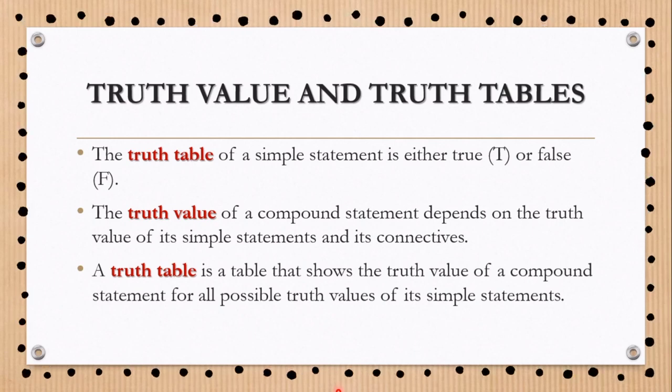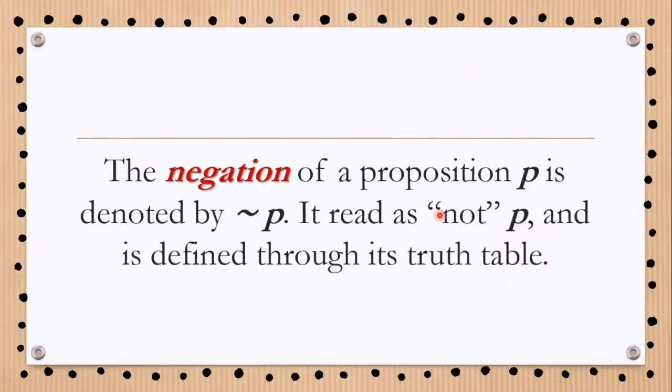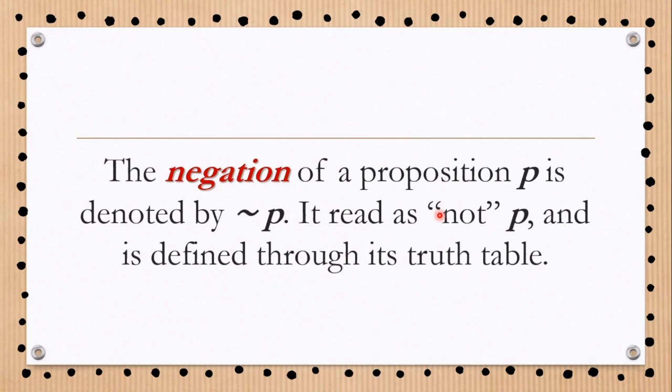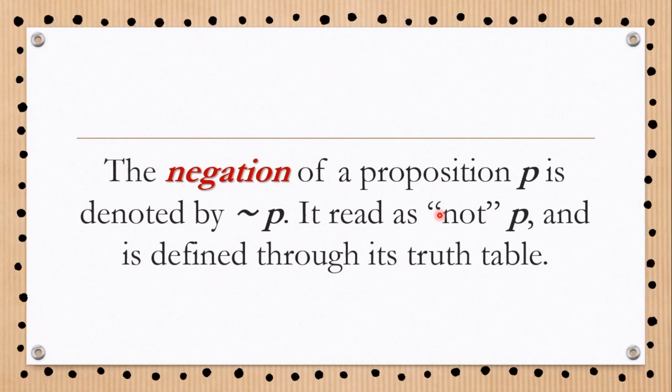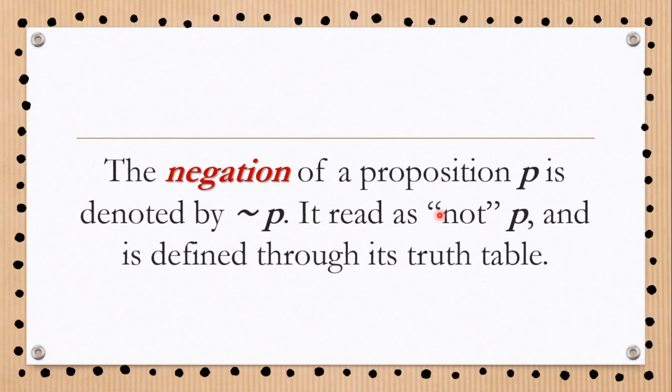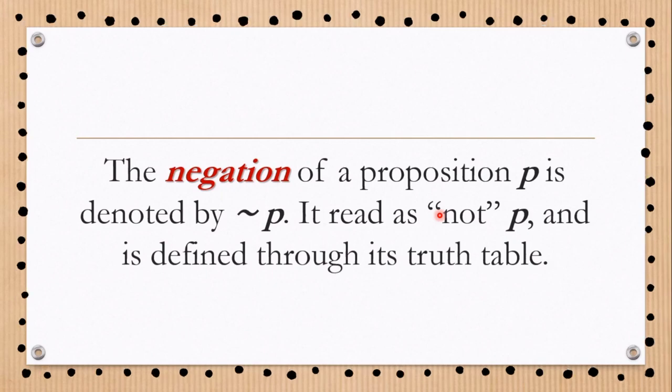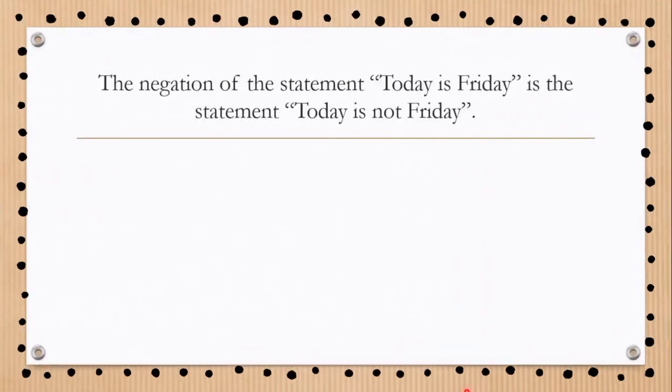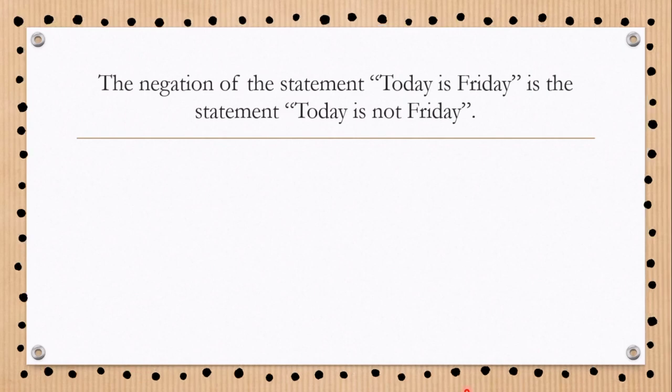The negation of a proposition P is denoted by not P. It is read as not P and is defined through its truth table. For example, the negation of the statement 'Today is Friday' is the statement 'Today is not Friday'.